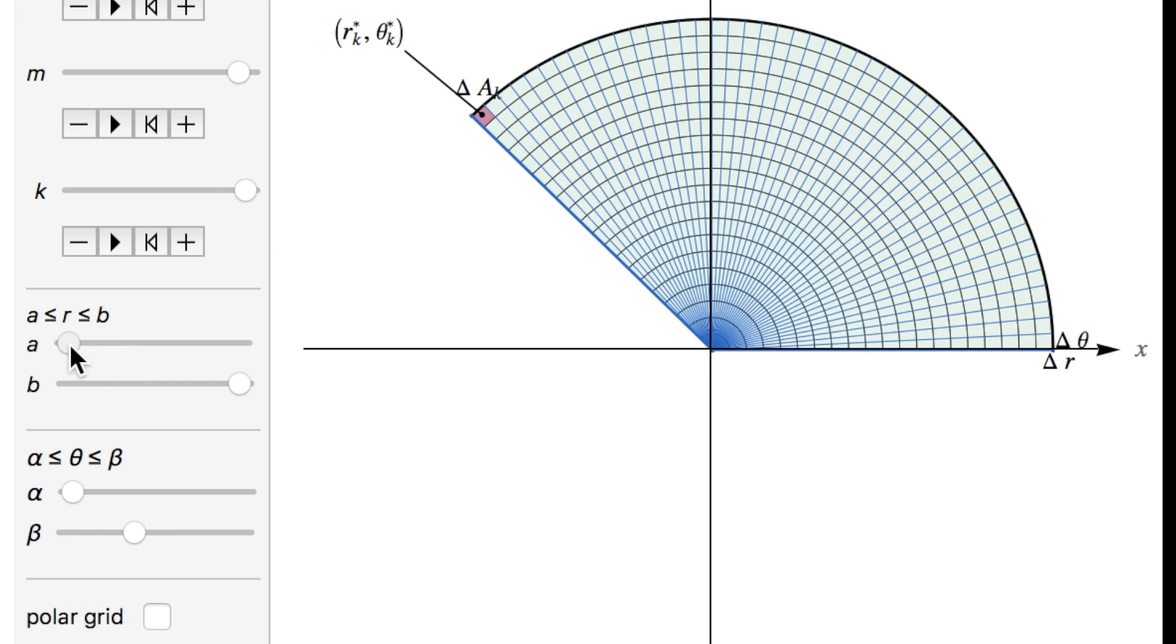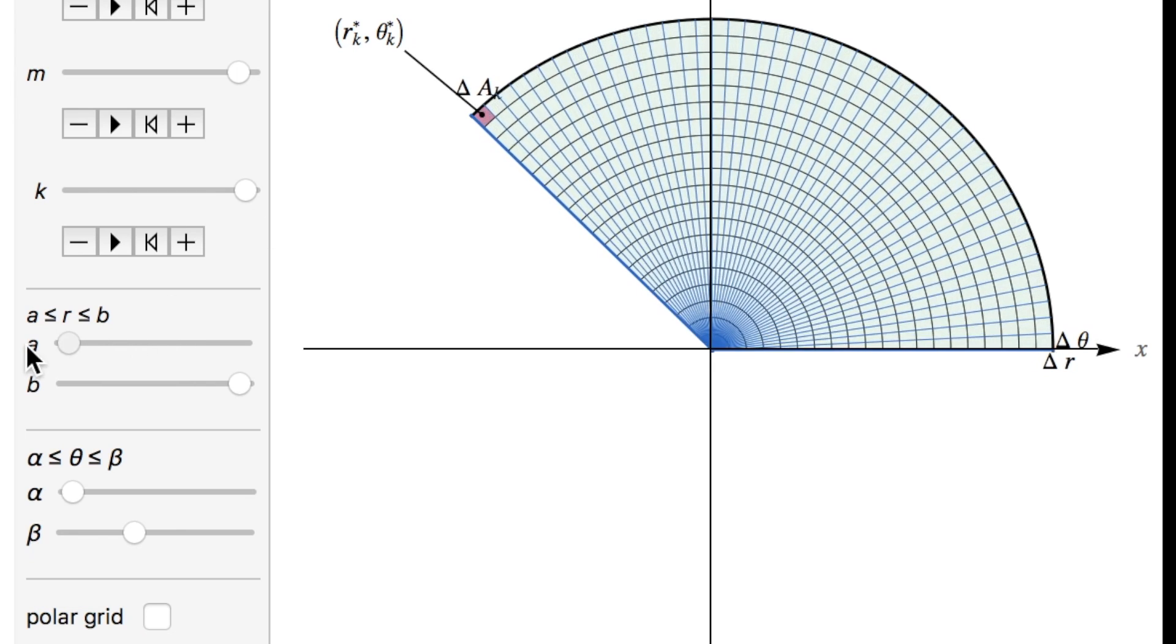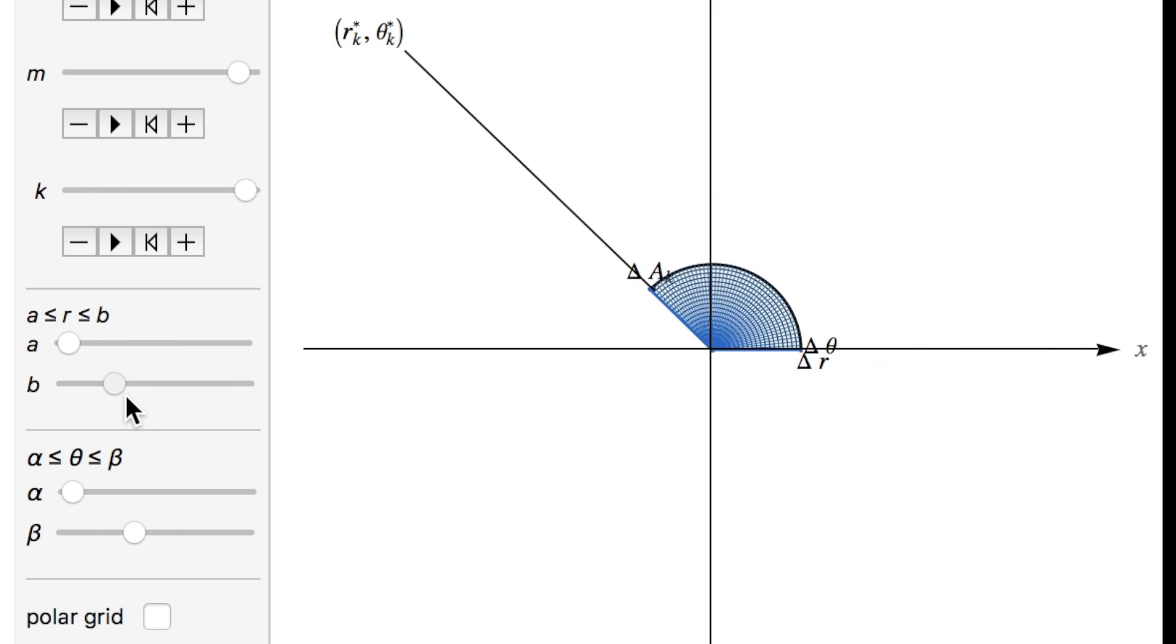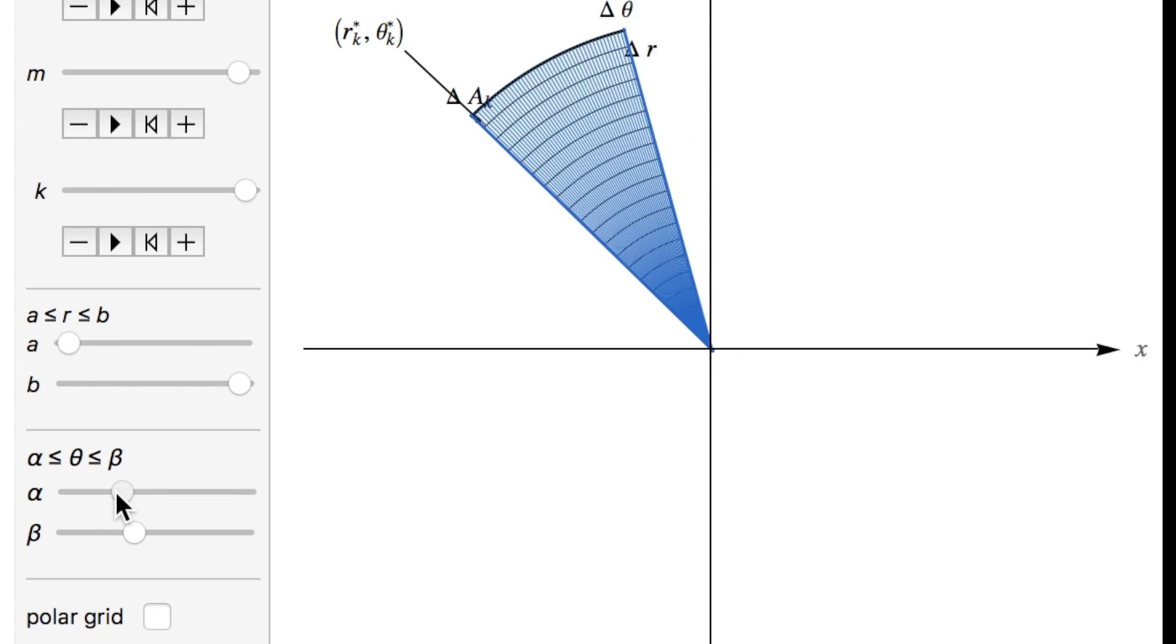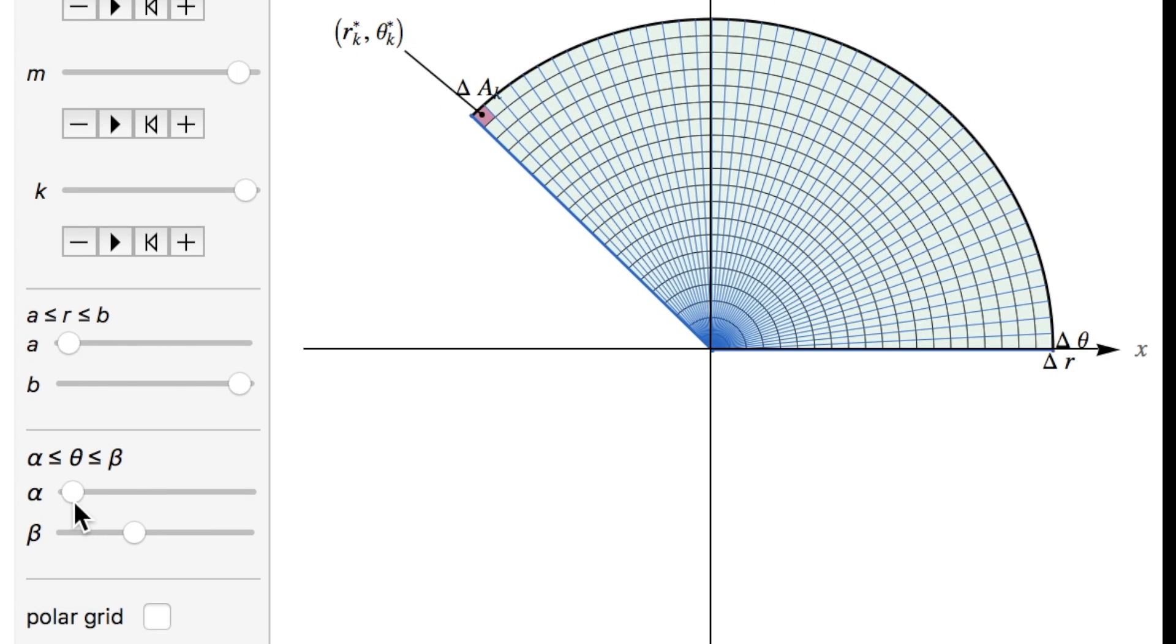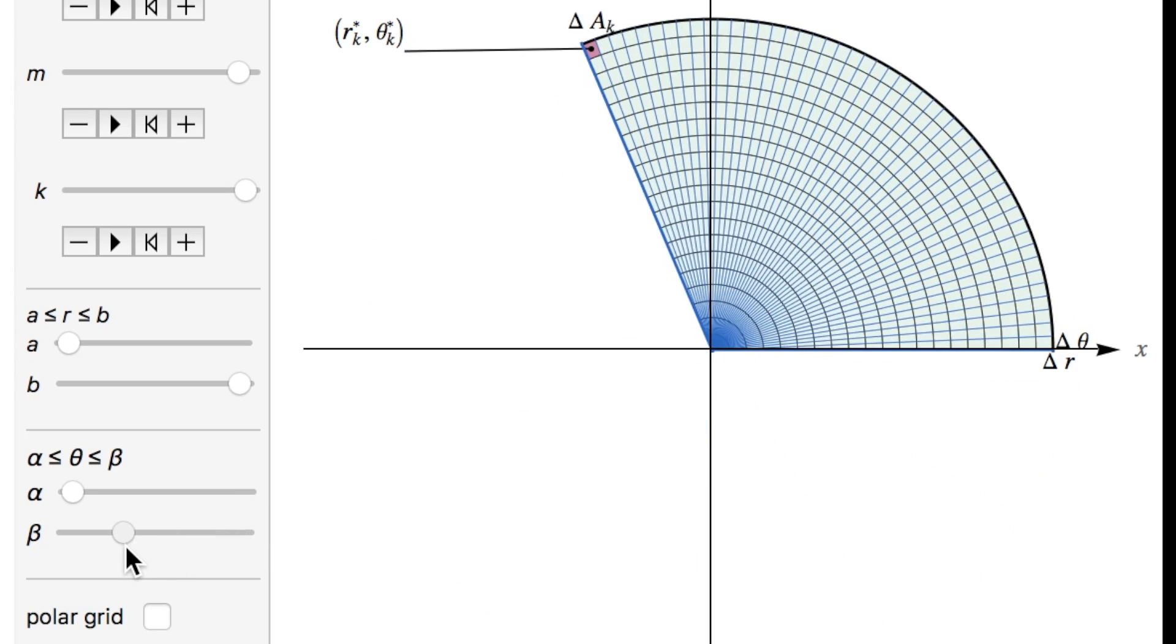You can also see that our bounds of integration will be different from rectangular or Cartesian coordinate systems because our bounds of integration will actually be from a to b for r for a polar rectangular region where r is a constant and from alpha to beta for theta.